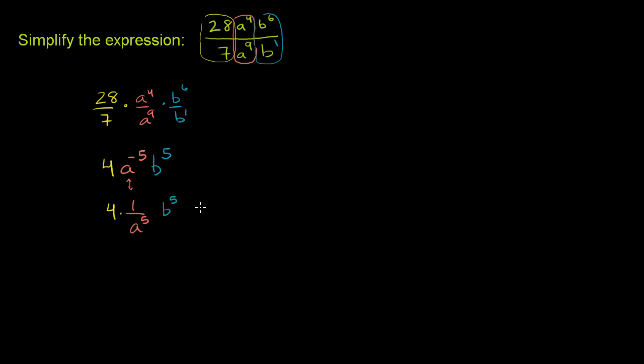Times b to the fifth, and then this, of course, would be equal to 4b to the fifth over a to the fifth. Or you could put 4b to the fifth over a to the fifth. All of these are legitimate ways, but all of these are simplified versions of our original expression.